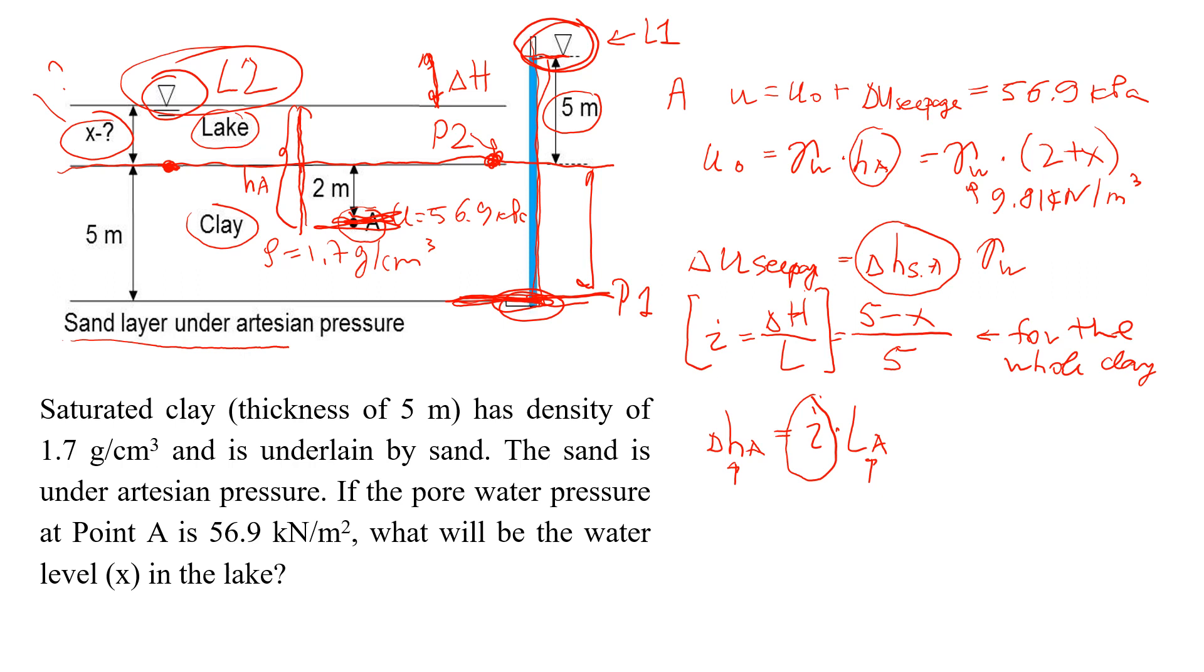But what you're going to see is that LA will be this two meters. So that's two meters. That's water still needs to seep through the soil layer. Then we have this i, which is hydraulic gradient, where it's 5 minus x divided by 5. So that's i.